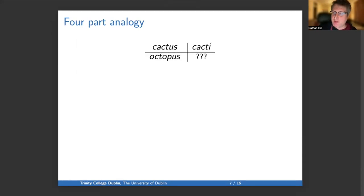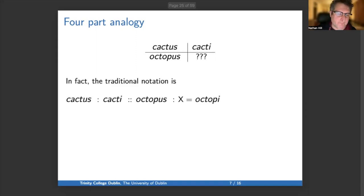Taking four-part analogy first, suppose I am in the middle of formulating a sentence and want to say the plural of octopus. I might correctly remember cactus has the plural cacti, but I'm groping for the plural of octopus. In the traditional notation, I would say cactus is to cacti as octopus is to what, and then I solve for the X with octopi.